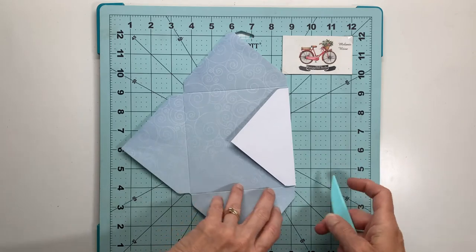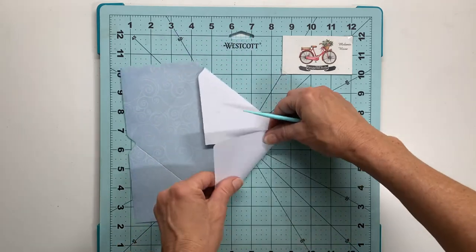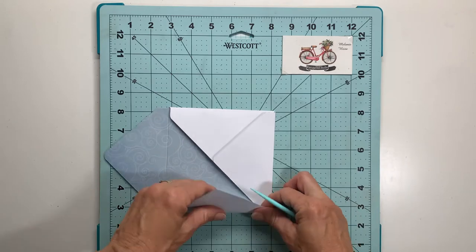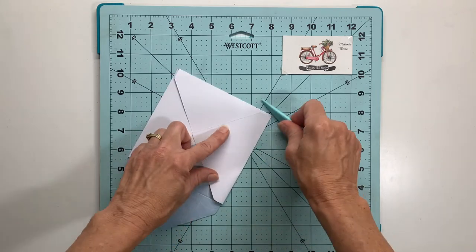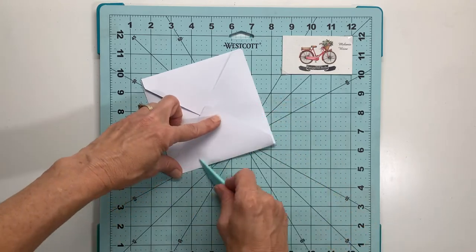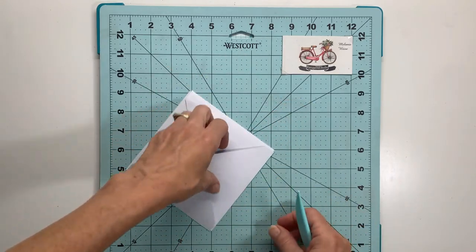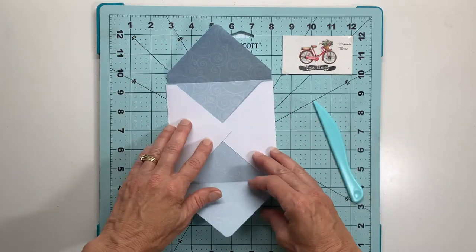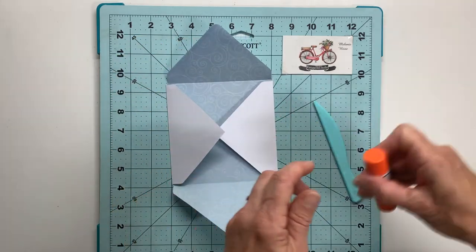Then you simply take your bone folder and reinforce those score lines. Again the white is the outside of my envelope and the blue will be the coordinating color for the inside of my envelope. And if you've watched any of my other videos you know that I'm a stickler for finishing my envelopes lined or coordinated to go with all of my cards.